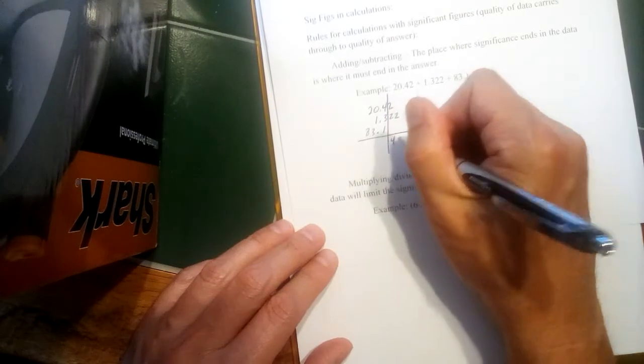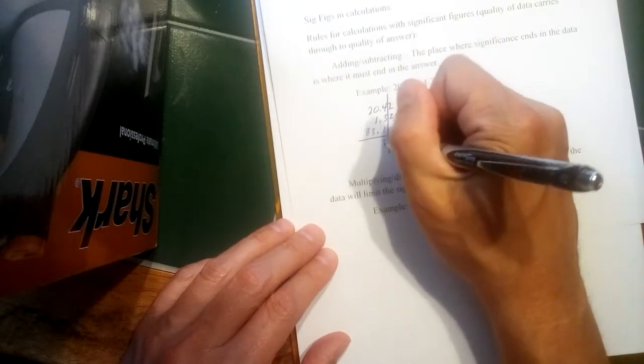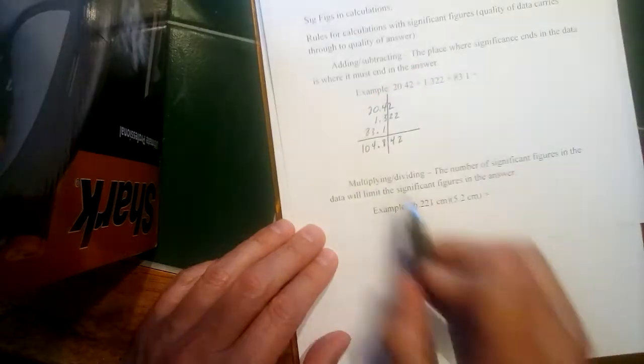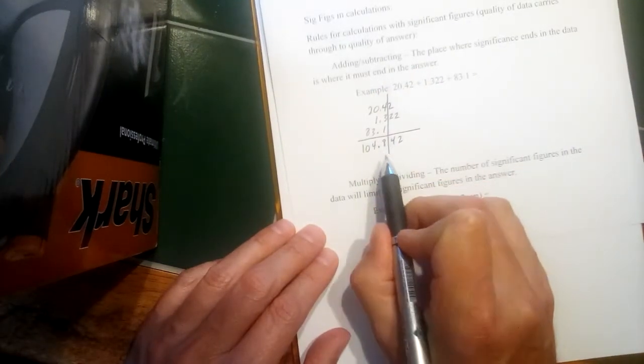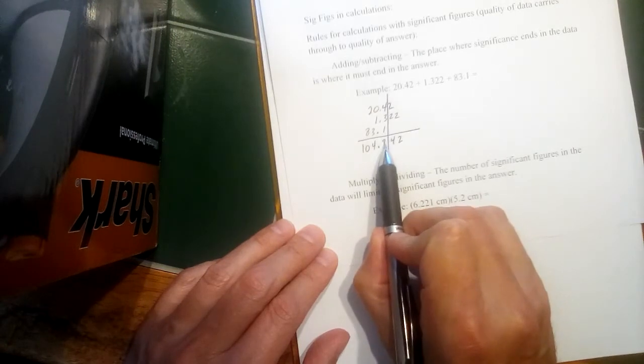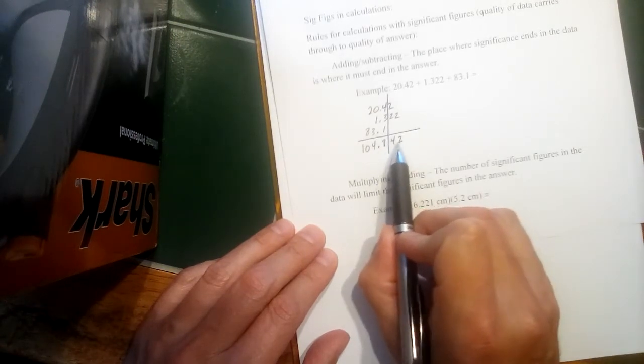When we add all this together, eight, four, and that would be 10. We've got to round wherever that line is. So I can keep 104.8 up through the tenths place. I have to get rid of everything that comes after.